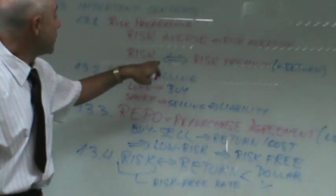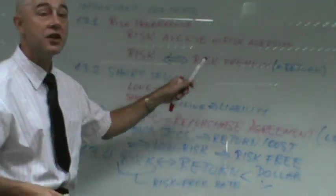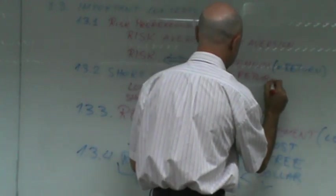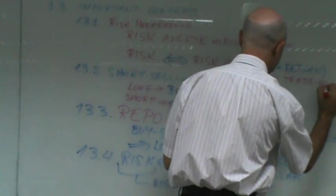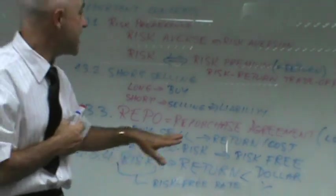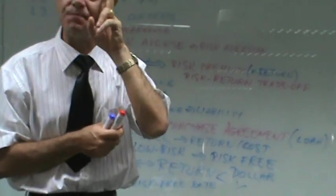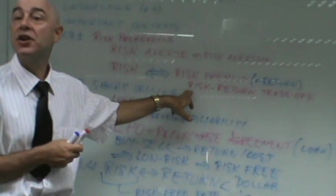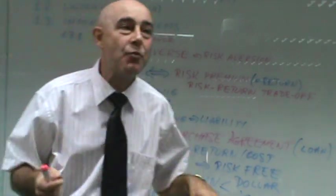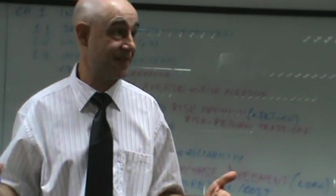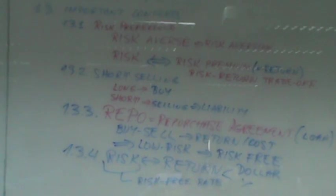The concept linking risk and return is called the risk-return trade-off. The risk-return trade-off says that the only way to get a higher expected return is to take a higher risk. In other words, if someone is promising you a very high return with low risk, they are lying to you — they're trying to cheat you. It's almost impossible.